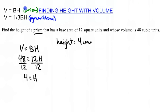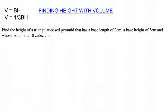Now we have another, more in-depth problem. Find the height of a triangular base pyramid that has a base length of 2 centimeters, a base height of 3 centimeters, and whose volume is 18 cubic centimeters. We're going to be using the pyramid equation: V equals one-third base area times height.